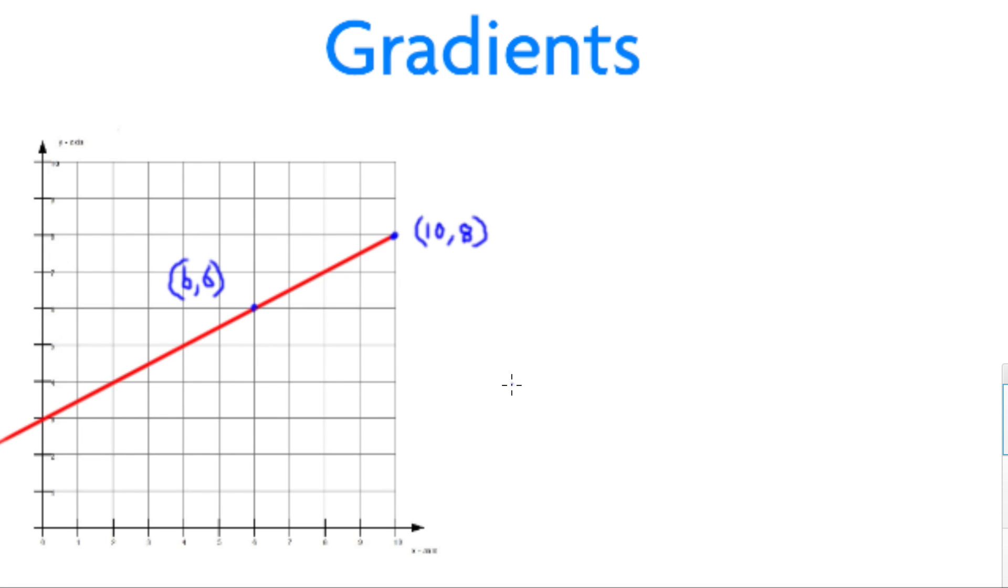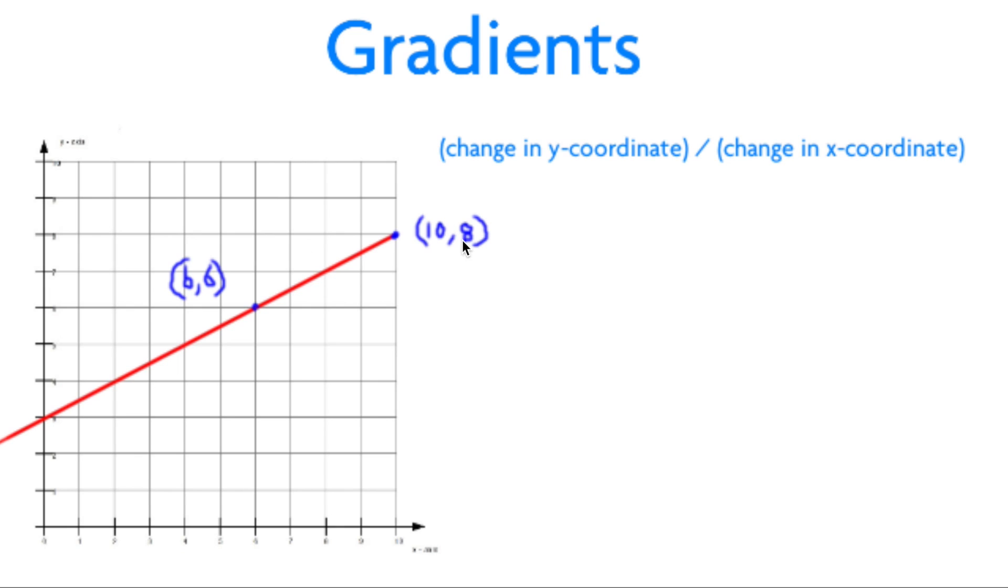Now we have our two points and coordinates noted, we use the expression change in y-coordinate, that's 8 minus 6 in our example here, divided by the change in the x-coordinate, that's 10 minus 6 in this example. This gives us the answer 2 over 4, or when simplified, we reach 1 half, or 0.5.